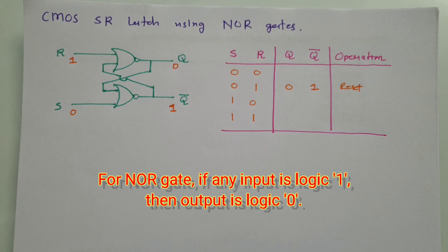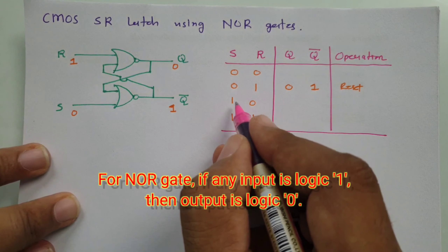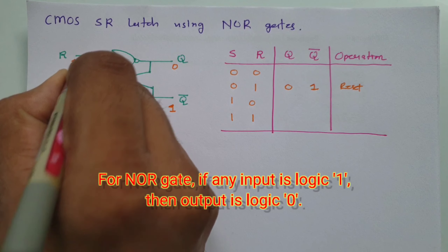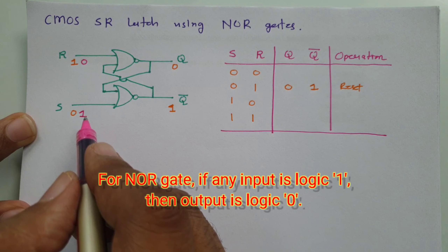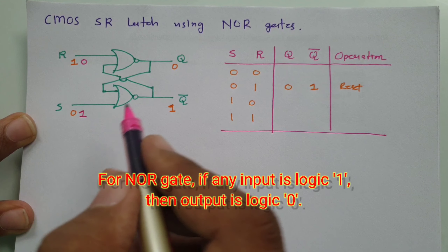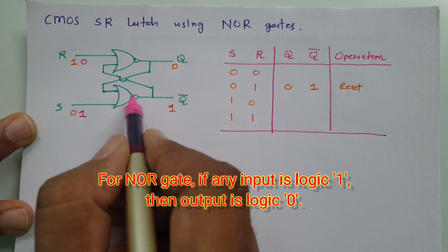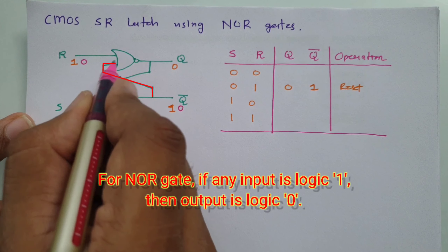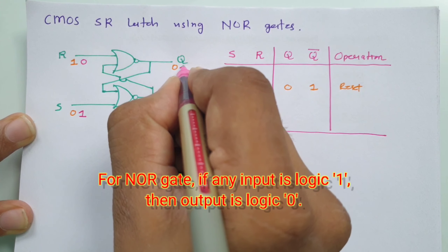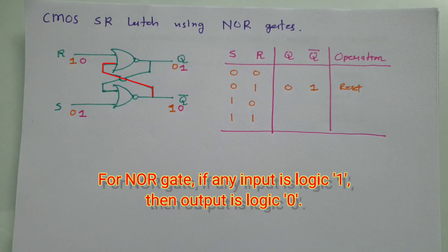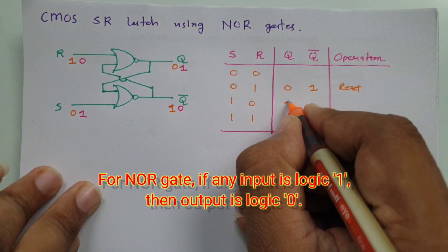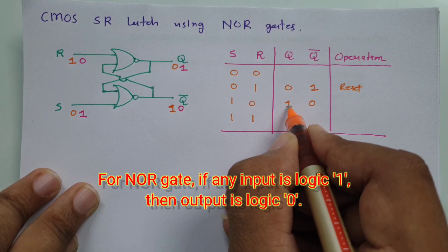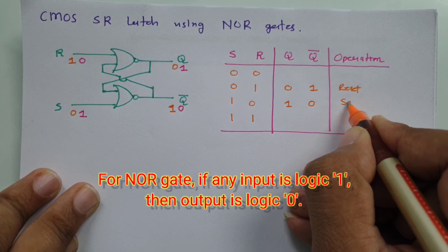Now consider the second case: S=1 and R=0. Since S=1 at the input of that NOR gate, output is 0. This 0 is fed back to the other NOR gate, giving it 0,0 input, making output Q=1. So output Q=1 and Q-bar=0. Since set is 1 and reset is 0, Q is 1, meaning this is the set operation.